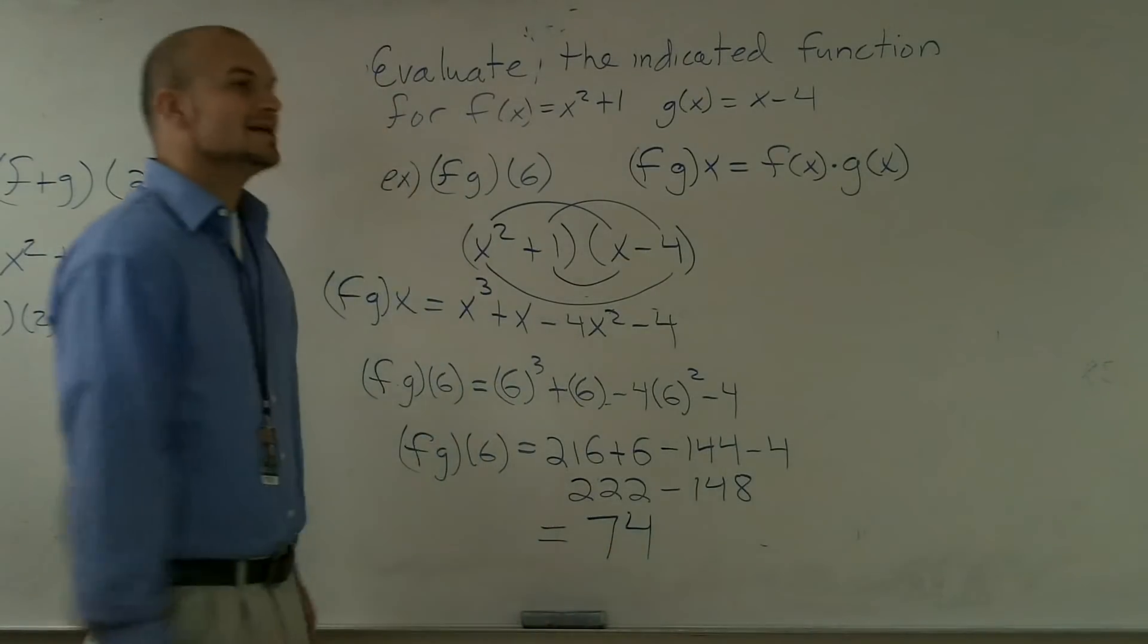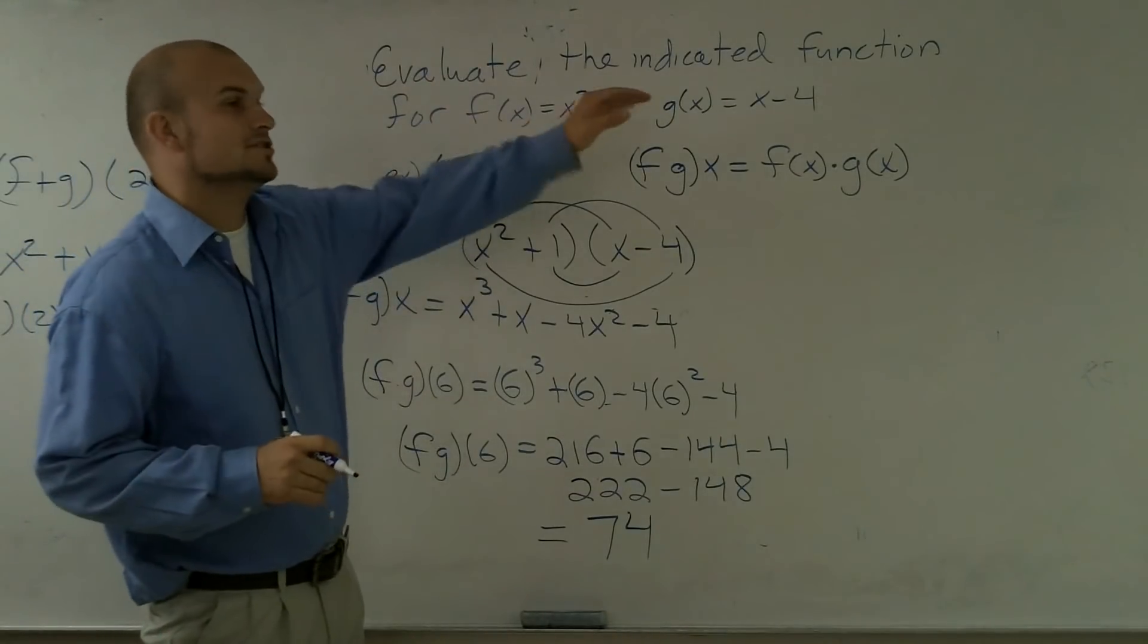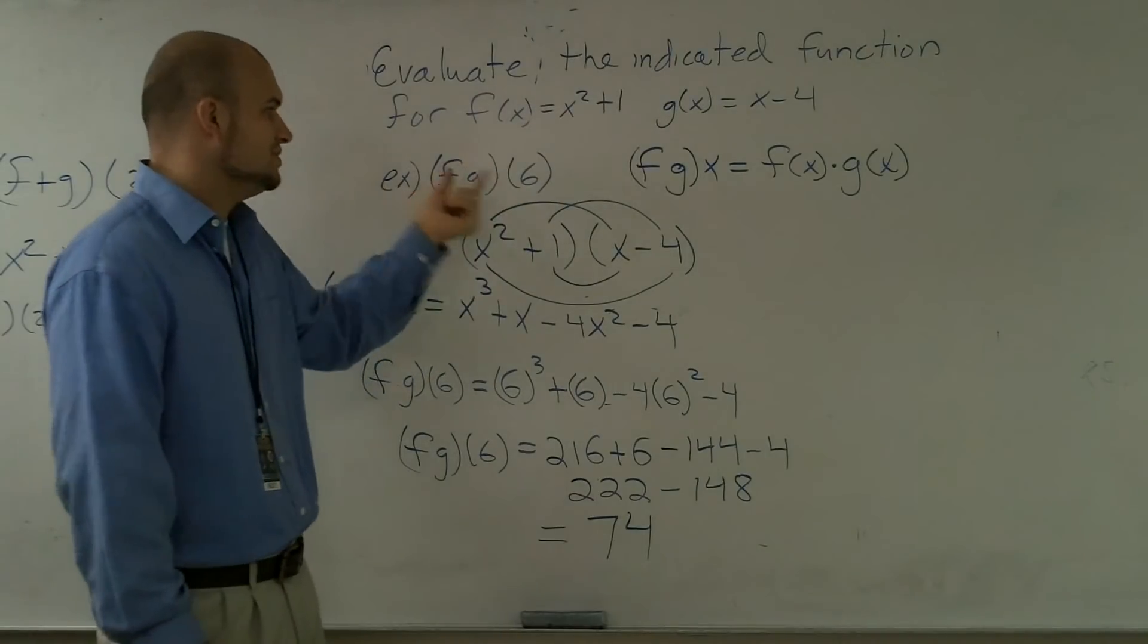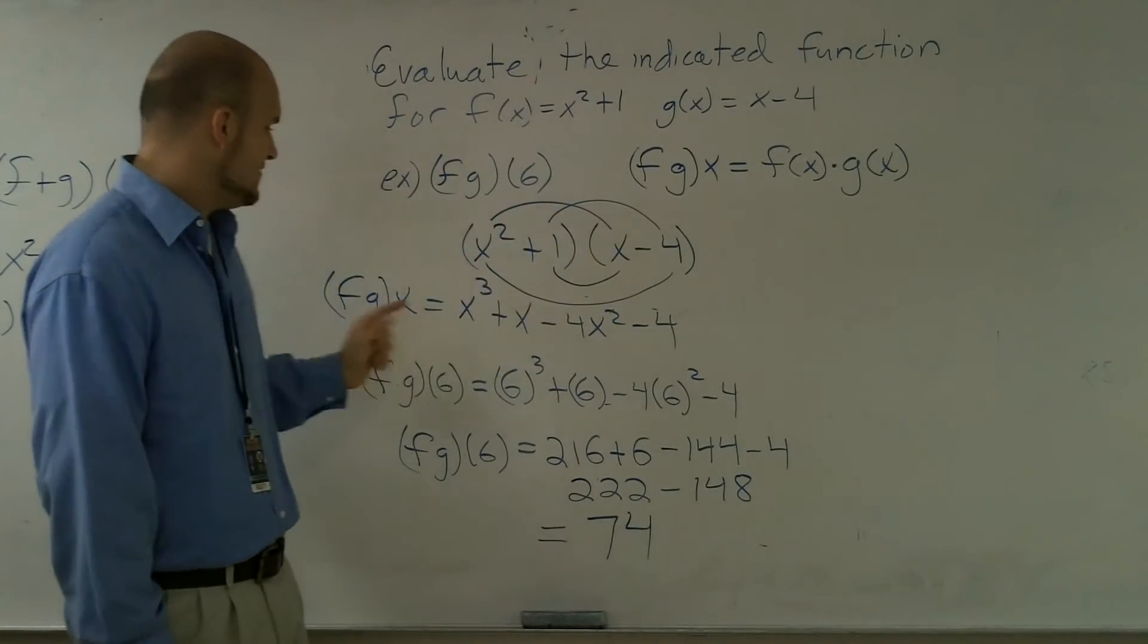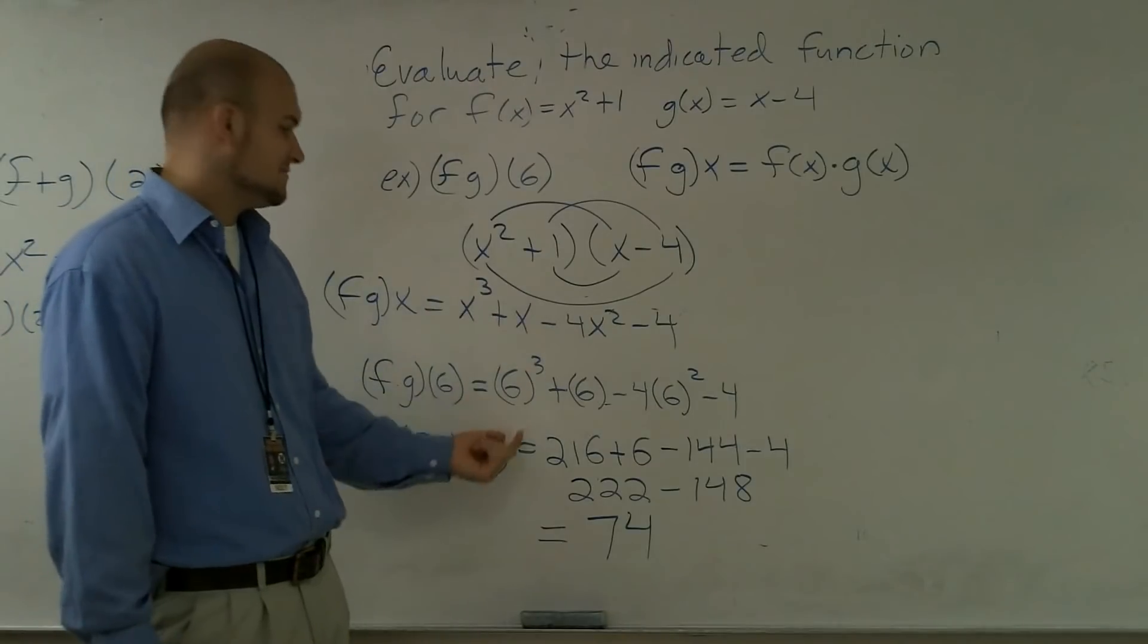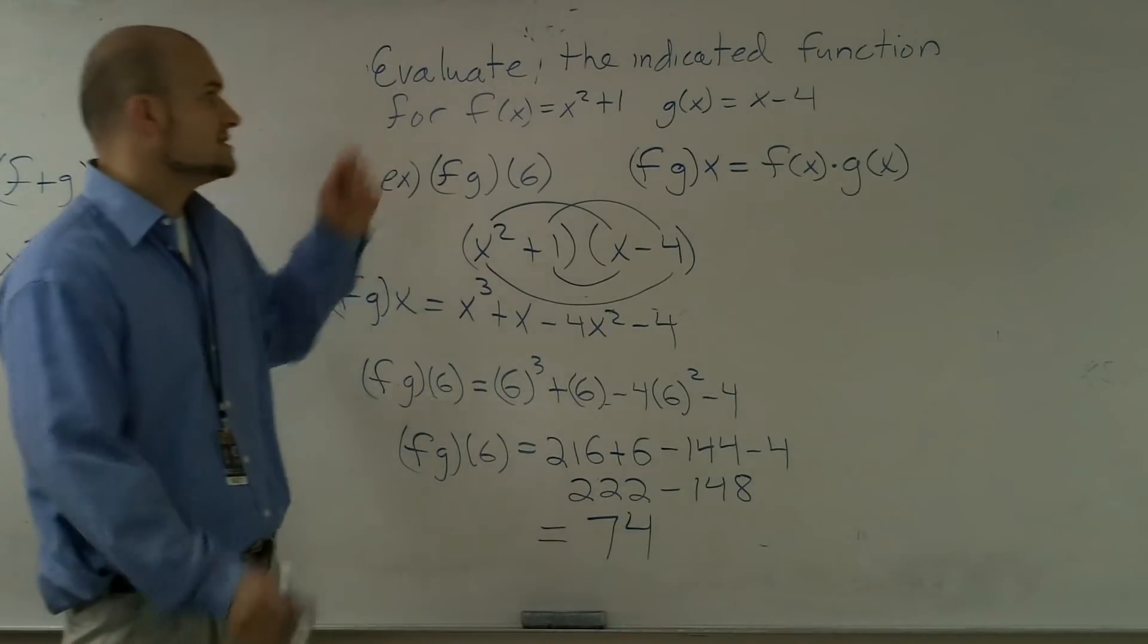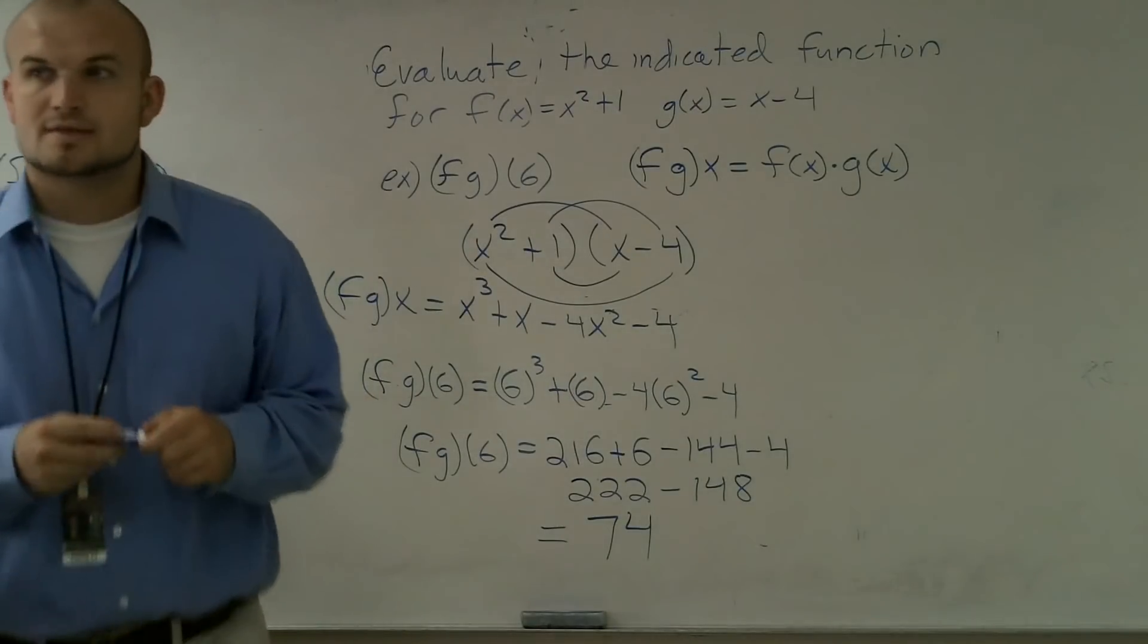So as far as the process goes, evaluate the indicated function. You have your f of x and your g of x. You just make sure you follow the process. It's multiplication. You multiply them and then evaluate for your term. And then after that, you do your basic math to get your end result. So that's how you evaluate the indicated function for f of x and g of x.